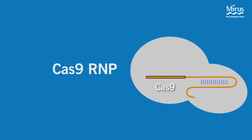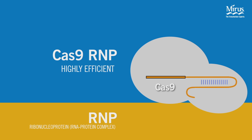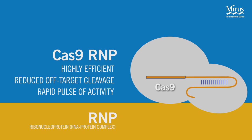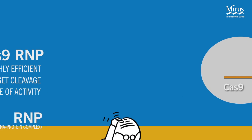Delivery of preformed Cas9 RNPs is favored by researchers who want to maximize efficiency and reduce the possibility of off-target cleavage events. This method provides the most rapid pulse of genome editing activity due to the fact that it bypasses both transcription and translation. Additionally, this method can be used for genome editing in cell types that are refractory to transfection with plasmid DNA.